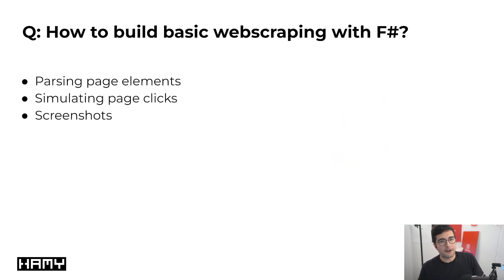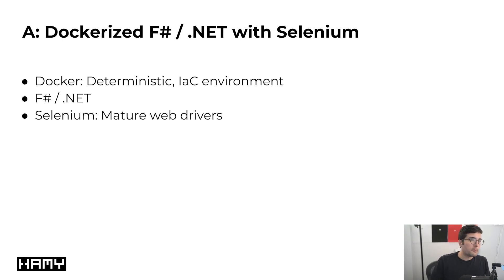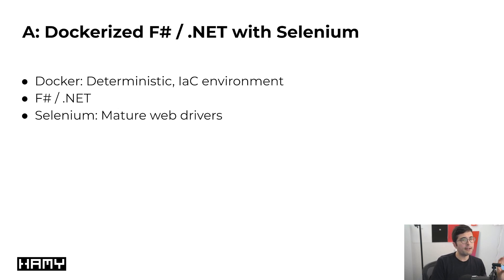The goal of this project was to figure out how we can build basic web scraping with F-sharp, hitting on the core basic elements you'll need for most kinds of web scrapers. Things like how do you actually parse the elements of a page, how do you simulate browser actions like page clicks, and how do you actually get screenshots — that was the whole goal of the end project I wanted to prototype. The answer is a Dockerized F-sharp .NET project using Selenium for the web drivers. I chose Selenium because it's a mature web driver that works across a lot of different languages and technologies, and it's probably the most mainstream one.